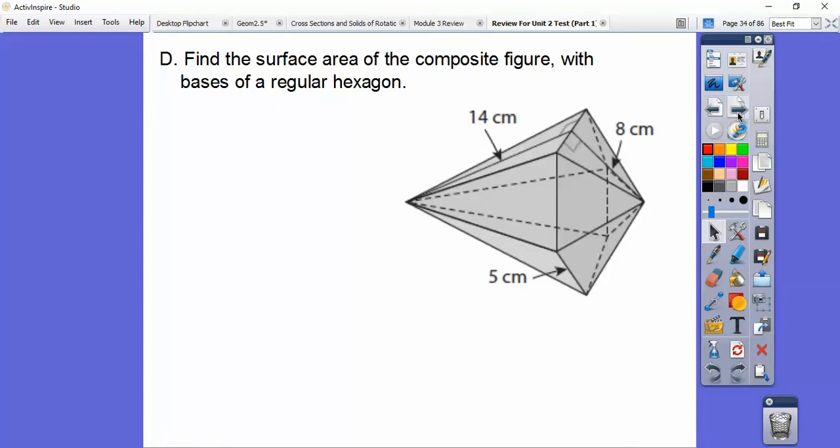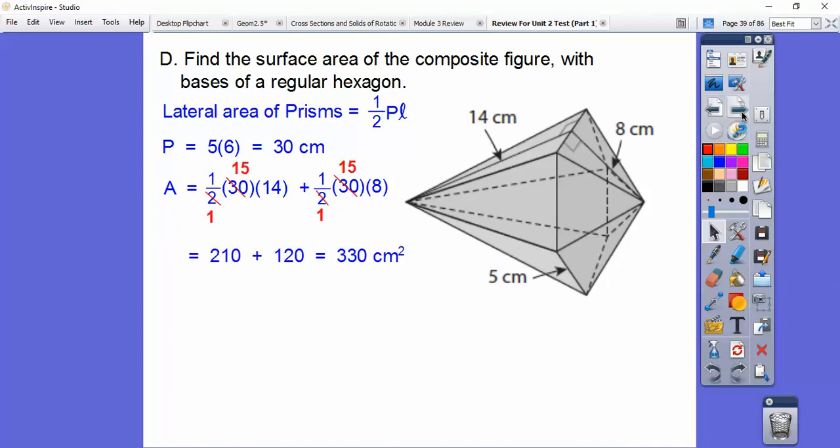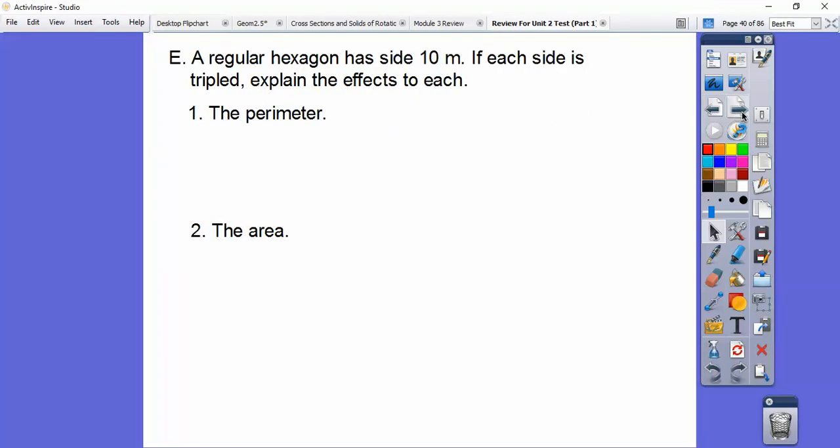Find the surface area of this composite figure with the bases of regular hexagons. Again, lateral area and lateral area. We're not including the base because it's inside. We're just doing the whole outside. Lateral area of a prism is one-half the perimeter times the slant height. The slant height is this 14 right here. Each side of this regular hexagon is 5, so the perimeter is 5 times 6. One-half pl plus one-half pl, we get 330 centimeters squared.